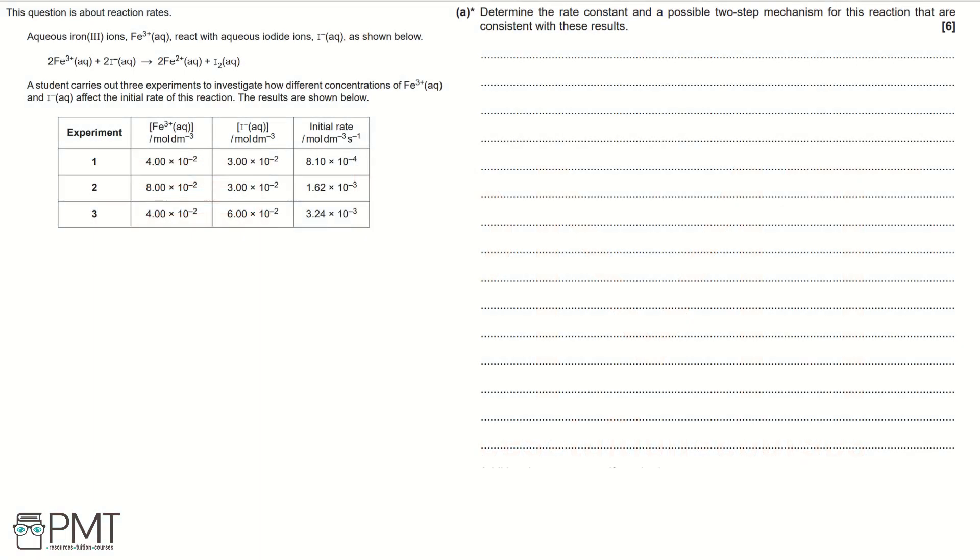This question is about reaction rates. Aqueous iron 3 ions, Fe³⁺ aqueous, react with aqueous iodide ions, I⁻ aqueous, as shown below. A student carries out three experiments to investigate how different concentrations of Fe³⁺ aqueous and I⁻ aqueous affect the initial rate of this reaction. The results are shown below. Part A: determine the rate constant and a possible two-step mechanism for this reaction that are consistent with these results.